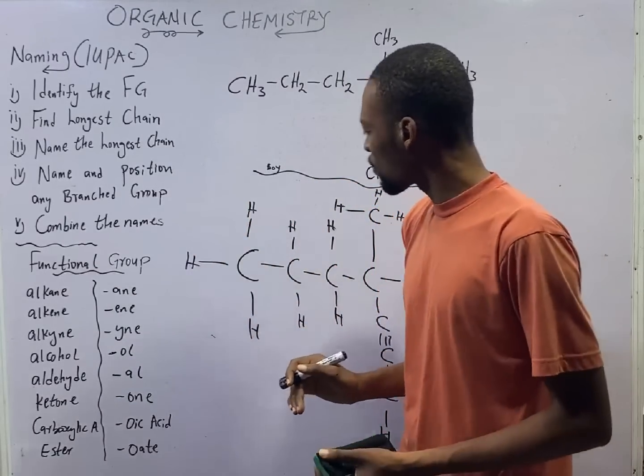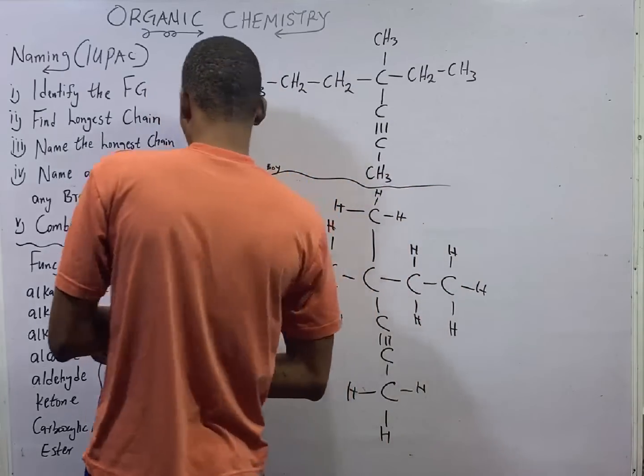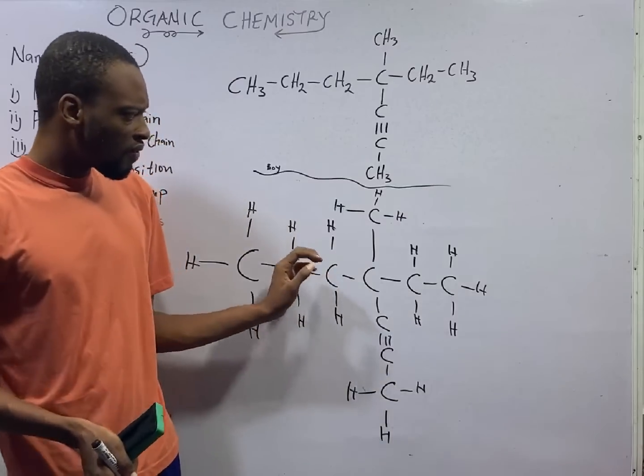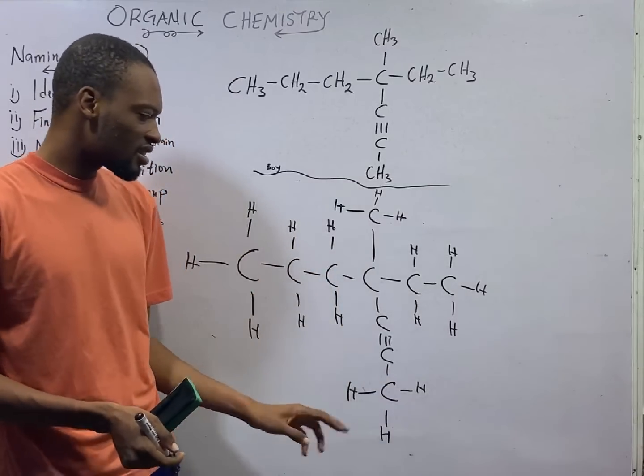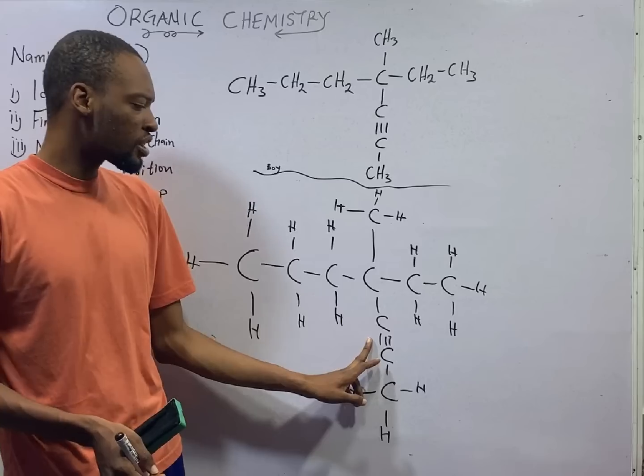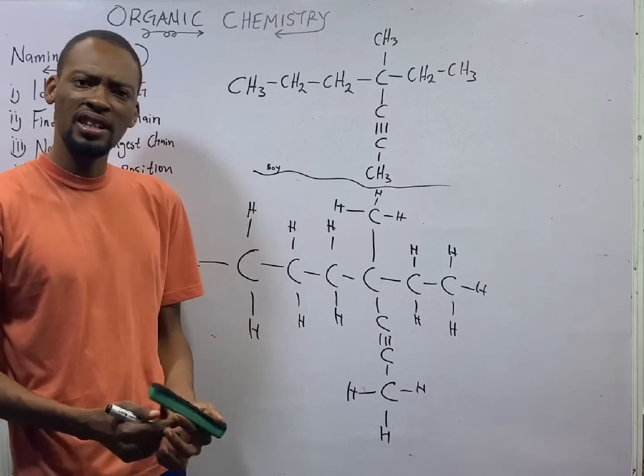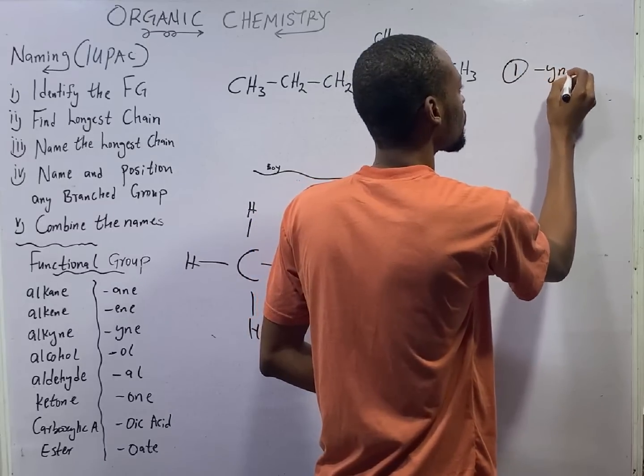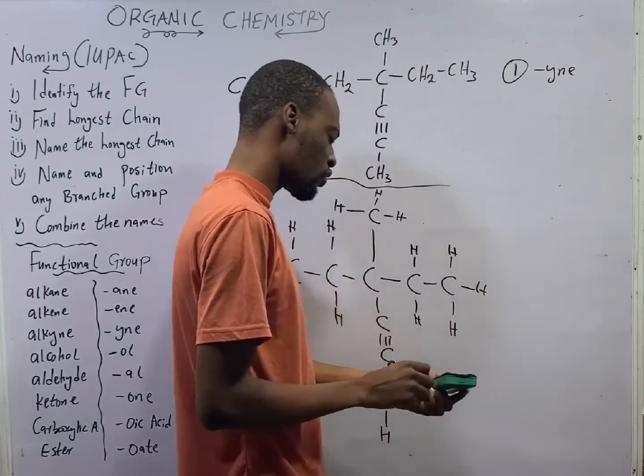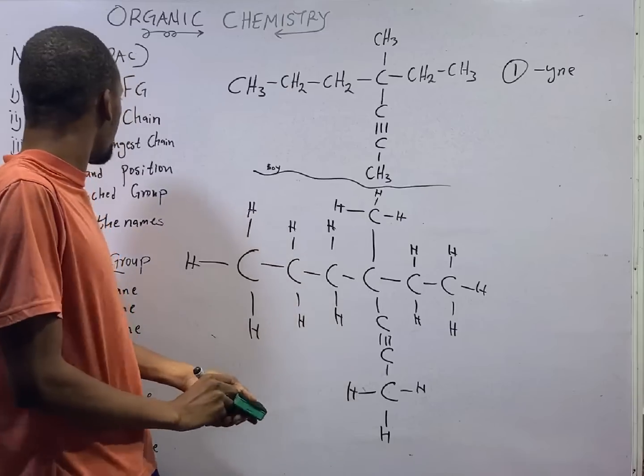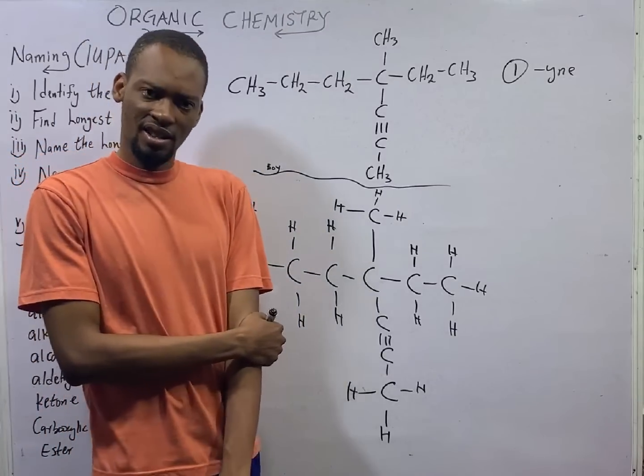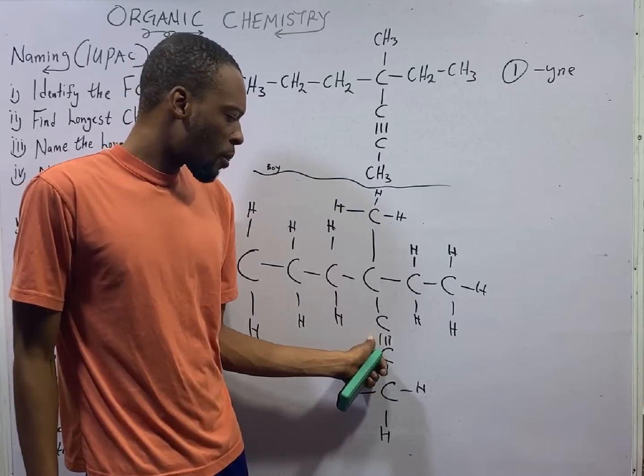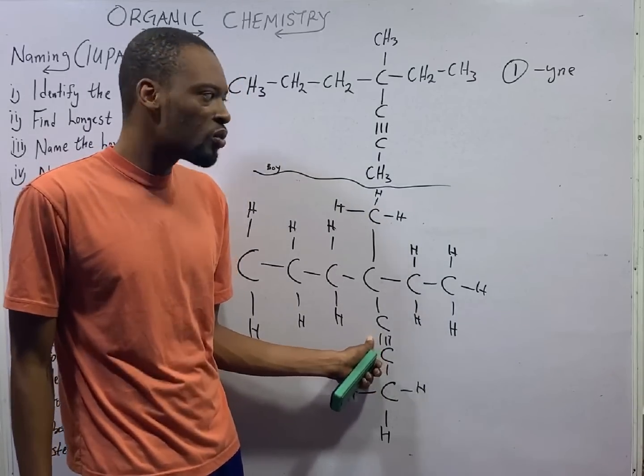Identify the functional group. Looking at this massive compound, the only thing I can see here is triple bond being the functional group. So this is definitely an alkyne. The suffix will be yne. That is the functional group. The next thing is to find the longest chain.